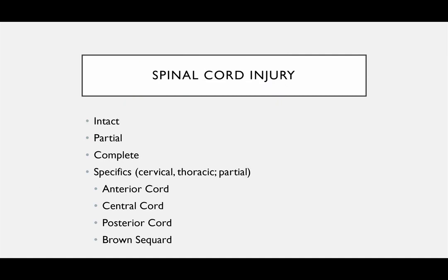Spinal cord injury: when you have a spinal cord injury, it can be intact — meaning no spinal cord injury — or you can have a partial spinal cord injury, or a complete spinal cord injury at a certain level. Other specifics we talk about are where it is — for example, at the C6 level — or whether it's a partial injury.